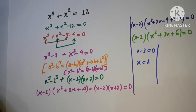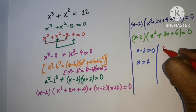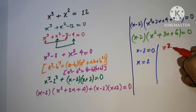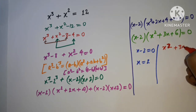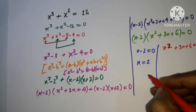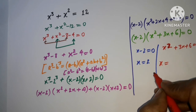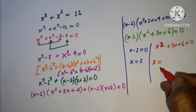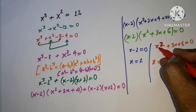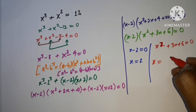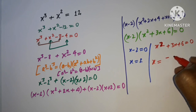For the second factor, x² + 3x + 6 = 0, we solve using the quadratic formula with the discriminant. This is in the form ax² + bx + c, so we apply x = (-b ± √(b² - 4ac)) / 2a.